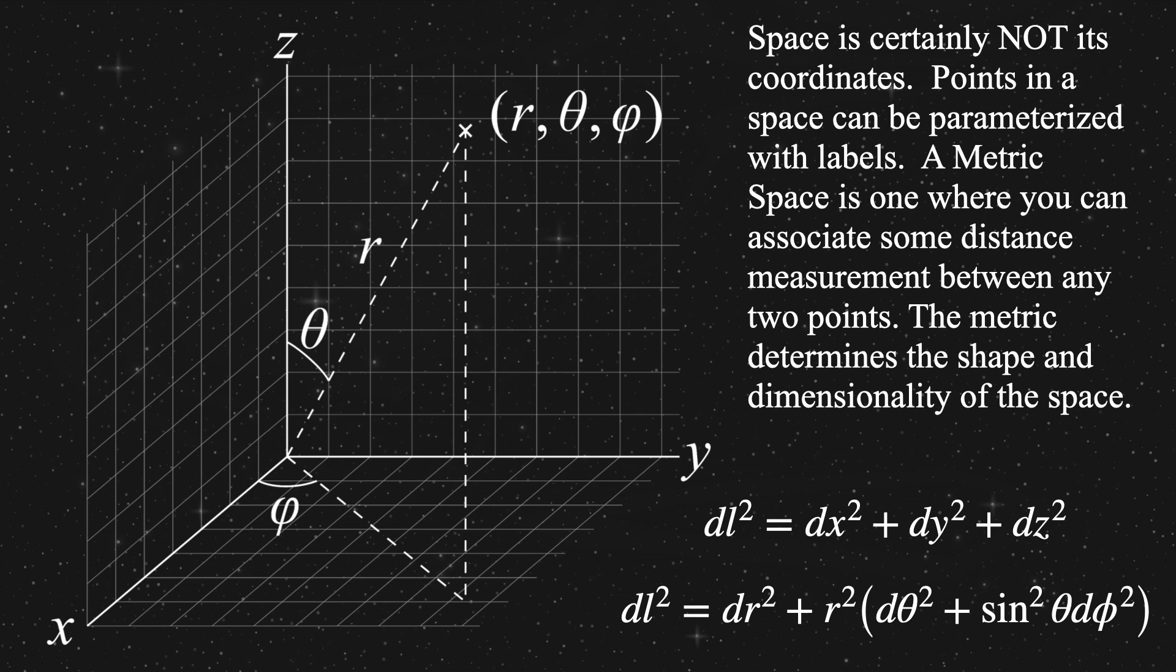Importantly, a space doesn't care about what label it is. We use the most convenient label to solve whatever problem we have. Neither one is the one correct coordinate system. Also, the labels themselves therefore are arbitrary, so long as they span the dimensionality of the space in question. The metric itself is also, in a very real way, independent of the coordinates. Its job is to translate coordinate differences into a distance.